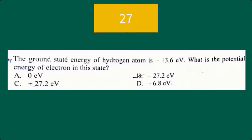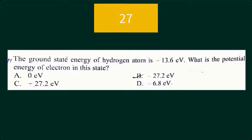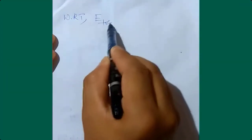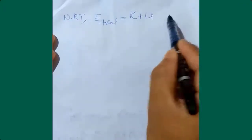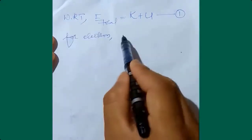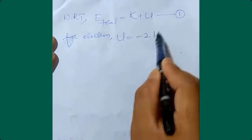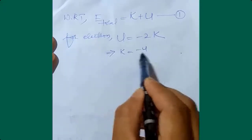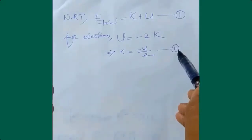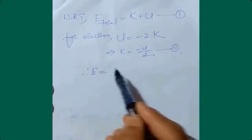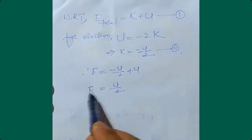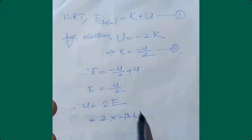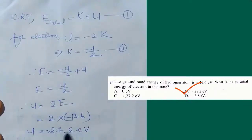The ground state energy of a hydrogen atom is minus 13.6 electron volts. What is the potential energy of the electron in this state? We know that total energy E_total equals kinetic energy plus potential energy. For an electron in orbit, potential energy equals minus 2 times the kinetic energy, and kinetic energy equals minus E_total. Substituting: potential energy equals 2 times the total energy, which gives 2 times (minus 13.6) equals minus 27.2 electron volts.